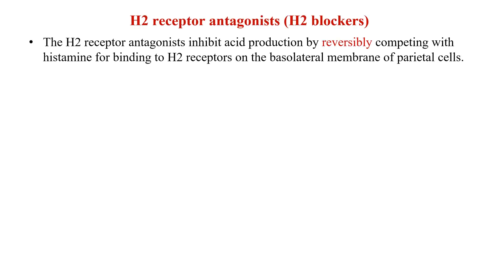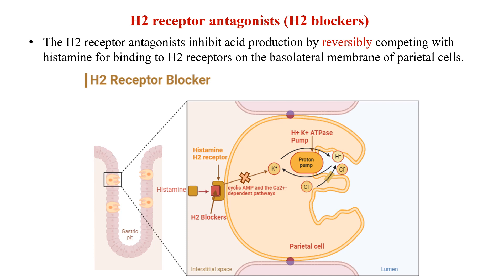Can you guess what H2 receptor blockers do inside your stomach? H2 receptor antagonists inhibit acid production by reversibly competing with histamine for binding to H2 receptors on the basolateral membrane of the parietal cells. These H2 blockers are especially attracted to and bind with the H2 receptor. This binding is reversible — meaning they are not permanently attached to the receptor.